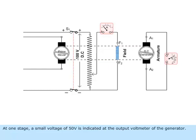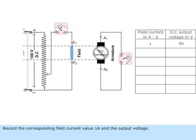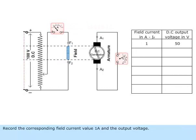At one stage, a small voltage of 50 volts is indicated at the output voltmeter of the generator. Record the corresponding field current value of 1 ampere and the output voltage.